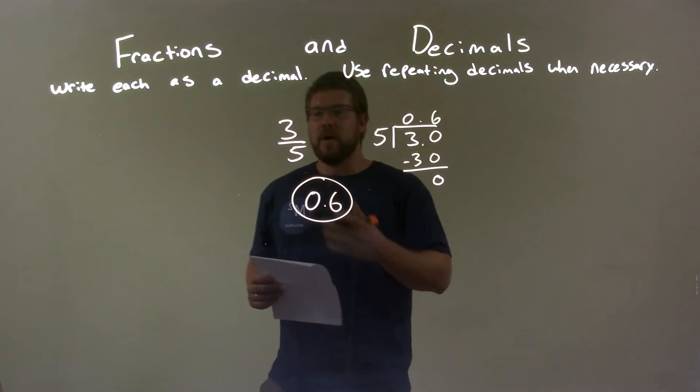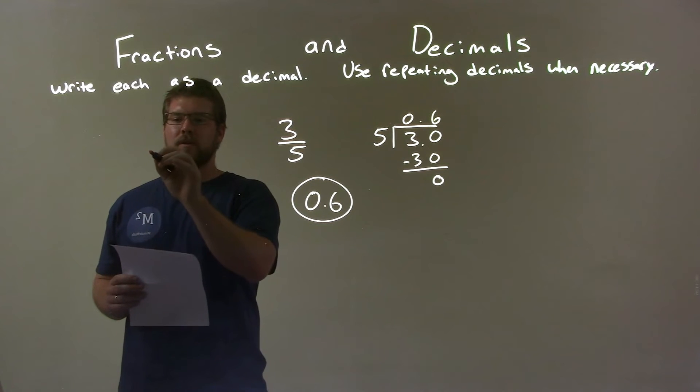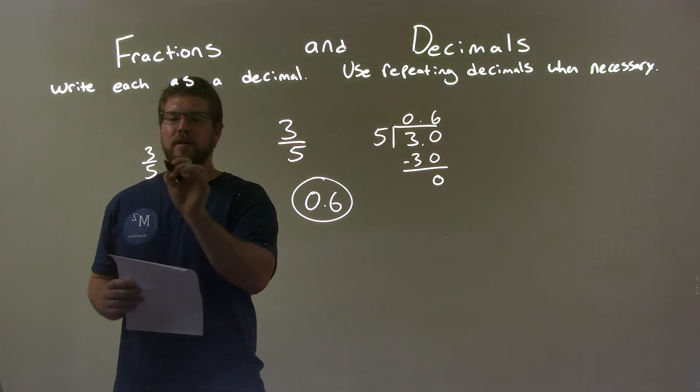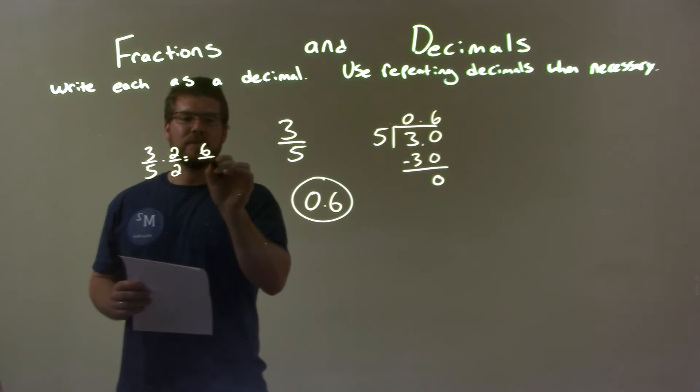Another way we could do this: three-fifths. If we double the numerator and denominator, so if I had three-fifths and I multiplied that by two over two, I would get six over ten.